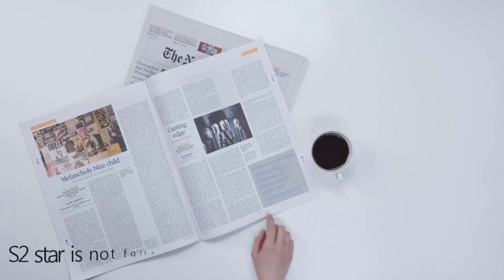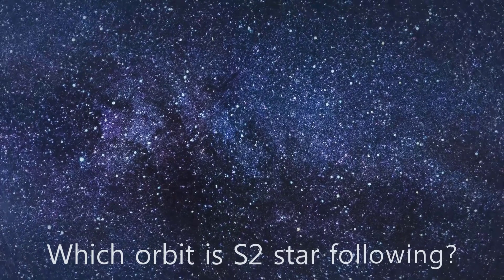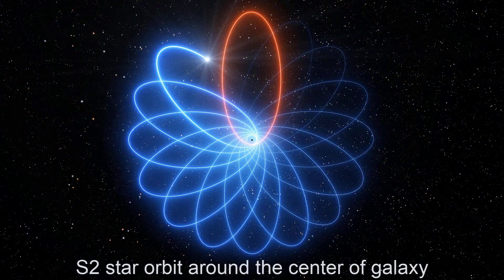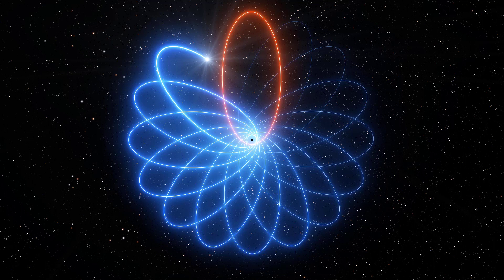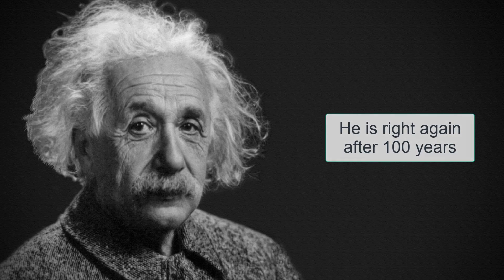In other words, the S2 star is not following an elliptic way around the center of our galaxy. Which orbit is the S2 star following? Look at the picture. This discovery fits with Einstein's relativity theory. One more of Einstein's predictions has been proved by scientists after 100 years.